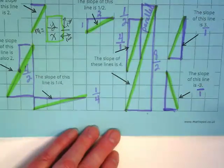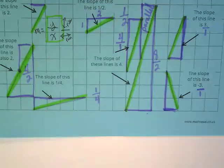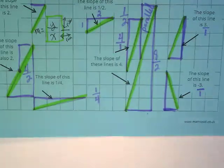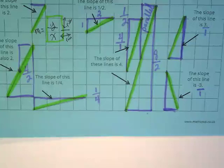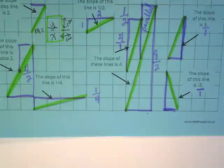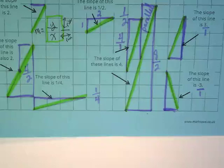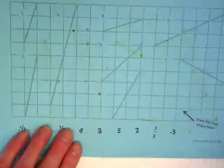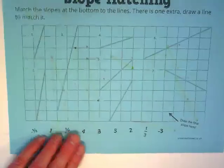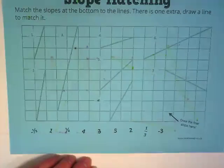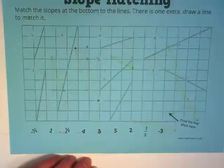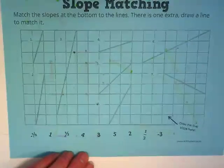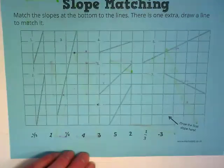Who's feeling a little bit better about how to define slope? Even if you can't, like, in words, put it into what the official definition is, is it making more sense? What questions do you have before we move on? No questions? Okay, turn your paper over. I am going to make you do this on your own. Match the slopes at the bottom to the lines. There is one extra, draw line to match it. So I'm going to give you guys a few minutes, and then we will come back and compare our work.